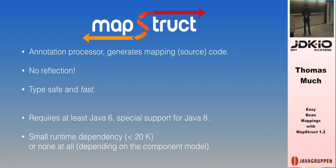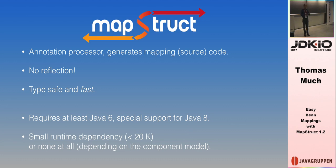Here comes MapStruct. MapStruct is an annotation processor that generates the mapping code. It doesn't use reflection, it's type-safe, and it's fast. You can see the generated code — it's readable and understandable; you can even put it under version control if you don't trust the generator. It requires at least Java 6, has special support for Java 8 repeatable annotations, has a minimal runtime dependency of less than 20 kilobytes, and if you use CDI you have no runtime dependency at all.